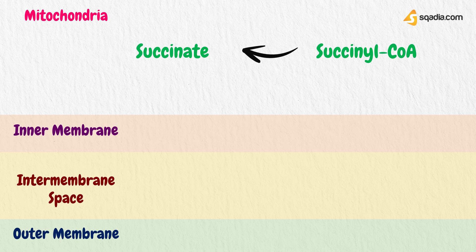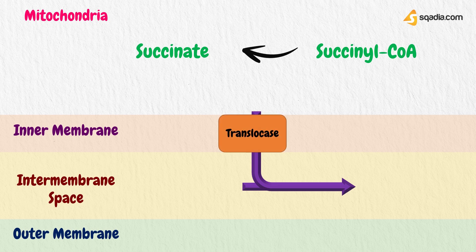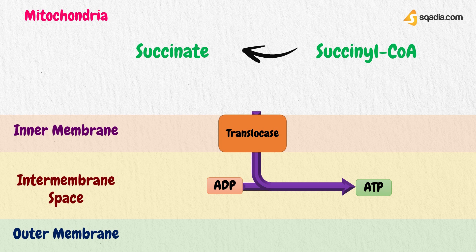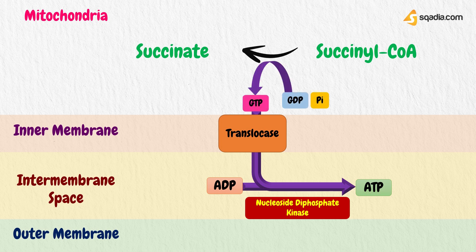The inner membrane of the mitochondrion is impermeable to ATP. A protein complex known as the ATP-ADP translocase is needed for the export of ATP in return for the import of ADP and phosphate anion. In the next step, succinyl coenzyme A undergoes an energy-conserving reaction in which it is cleaved to form succinate. This reaction is accompanied by phosphorylation of guanosine diphosphate (GDP) to guanosine triphosphate (GTP). The GTP thus formed then readily transfers its terminal phosphate group to ADP, forming an ATP molecule. The reaction is catalyzed by the enzyme succinyl coenzyme A-synthase.